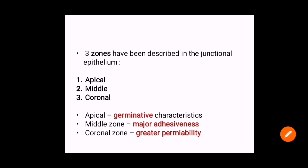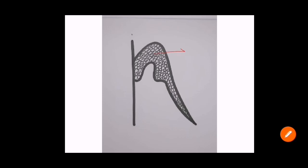Junctional epithelium can also be described in terms of three layers: an apical layer, a middle layer, and a coronal layer. The apical layer has germinative characteristics, the middle layer shows adhesiveness, and the coronal layer shows greater permeability. You can remember this as PAGE: Permeability (coronal), Adhesiveness (middle), and Germinative characteristics (apical).